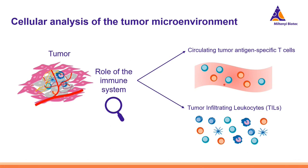Tumor is a very complex tissue. In this webinar, in this particular session, we will focus on the analysis of the role of the immune system within the tumor. One component of the immune system reacts to the tumor and is actually circulating in the blood, and we have just learned from Lorenz how we can analyze this cellular component. Another part of the immune response remains actually within the tumor, and this is what we call tumor infiltrating leukocytes. We will focus now on the analysis of the TILs.